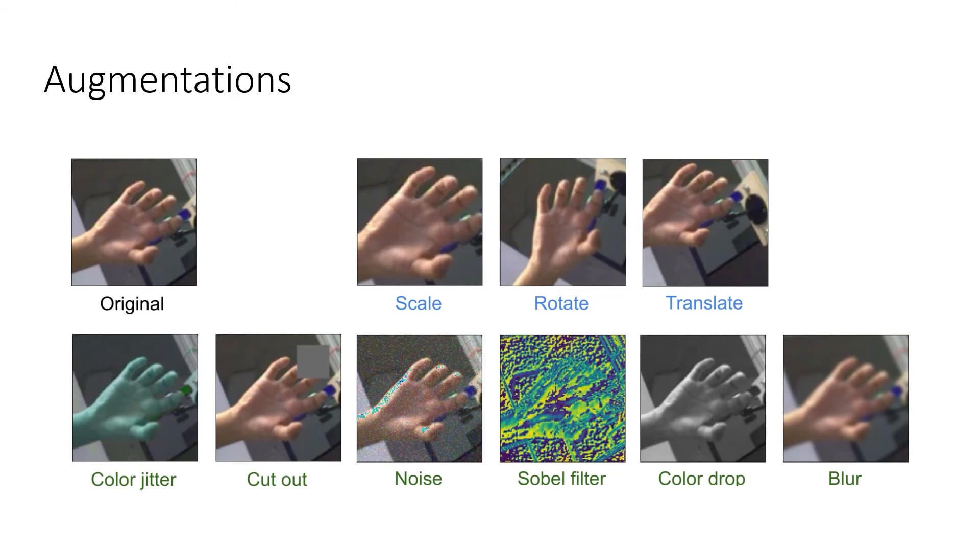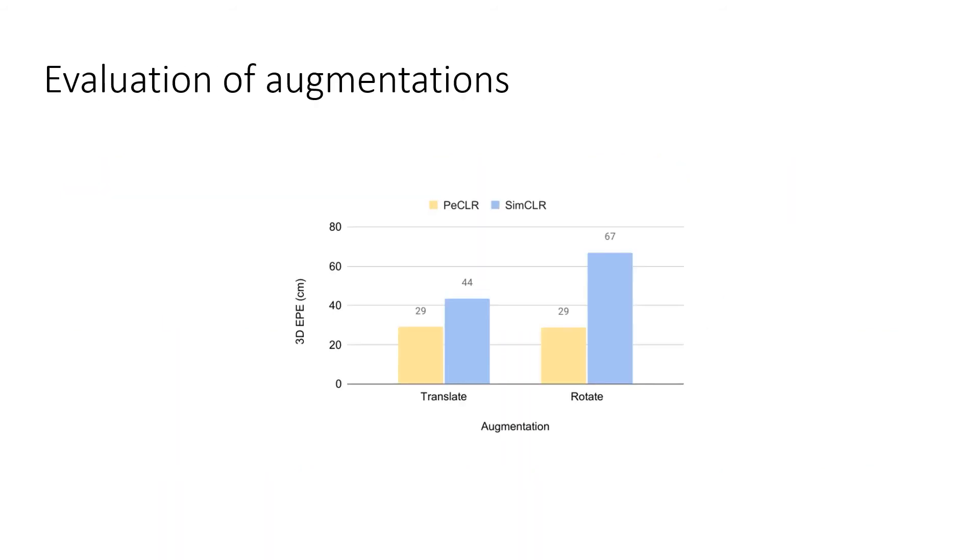We consider a variety of transformations, both appearance-based, here shown by the green text, as well as affine transformations, shown in blue text. Note that it is for these affine transformations we compute our equivariant contrastive loss. As the latent vectors are normalized, undoing the scaling in latent space will have no effect. Hence, our loss formulation addresses the rotation and translation transformations. Let us take a closer look at how these are affected by evaluating the resulting feature representation using either SimCLR or PECLR. We pre-train a ResNet-50 for each augmentation using either framework and evaluate its performance by training an MLP on the resulting feature representation. The performance is quantified as a 3D endpoint error on FreiHAND. We observe that for both translation and rotation, PECLR clearly outperforms SimCLR. This indicates that equivariant contrastive loss formulation is more aligned with the pose estimation task.